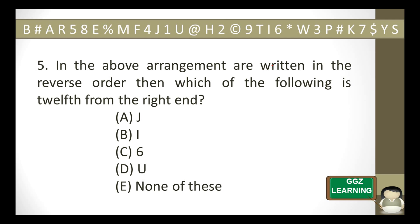The next question: if the above arrangement is written in reverse order, which of the following is the 12th from the right end? We don't need to physically reverse it. If reversed, left becomes right and right becomes left. Since they ask the 12th from the right end, we simply find the 12th element from the left end of the original: 1, 2, 3, 4, 5, 6, 7, 8, 9, 10, 11, 12 — so J is the answer.